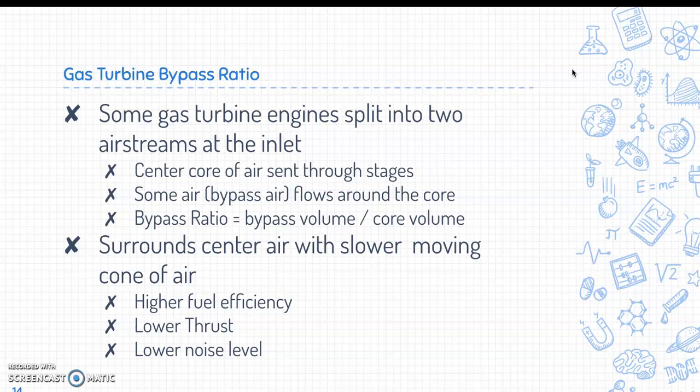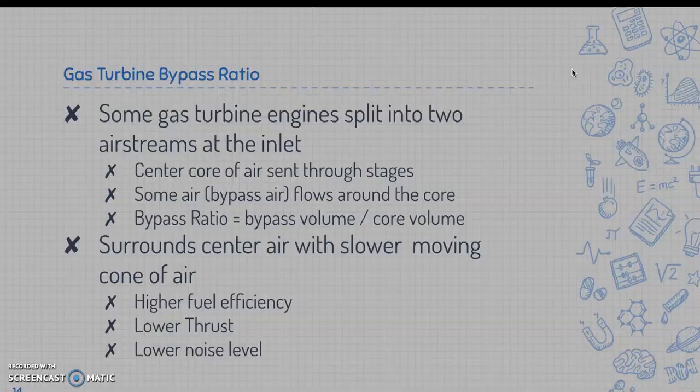Some gas turbine engines split into two air streams at the inlet. The center core of air is sent through the stages, while bypass air flows around the core. The bypass ratio is calculated by dividing the bypass volume by the core volume. The bypass air surrounds the center air with a slow-moving cone of air, which can result in higher fuel efficiency, lower thrust, and a quieter engine.